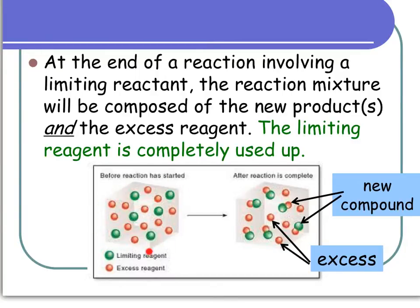Before the reaction, the two chemicals are in the same container but have not combined yet. After the reaction, you can see red-and-green pairs — that is my new compound, my product. Every single green atom is matched up with a red one, but there are extra red ones without a partner. This is exactly like the sandwich scenario: all the bread matched up, but there was leftover lunch meat and cheese.